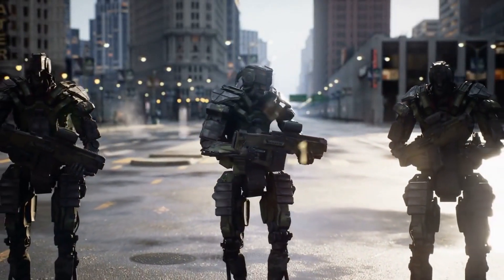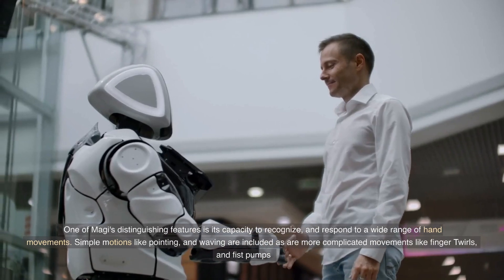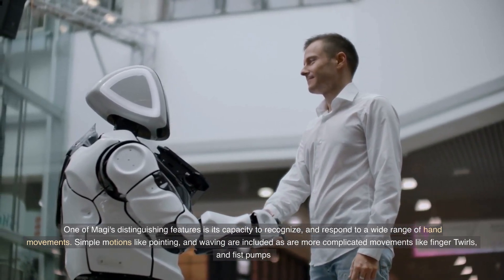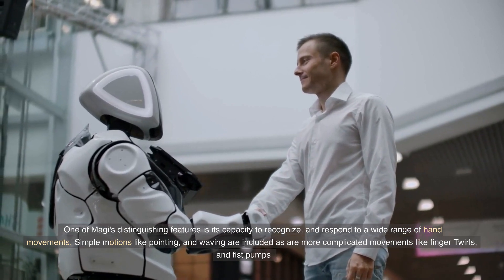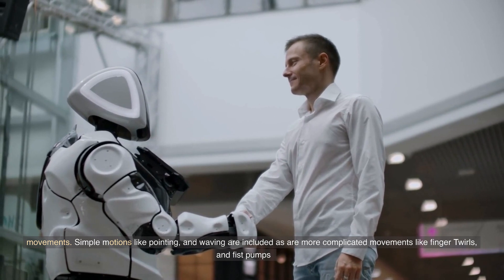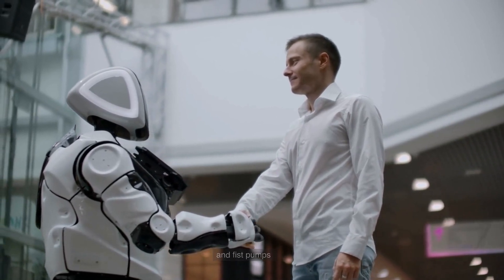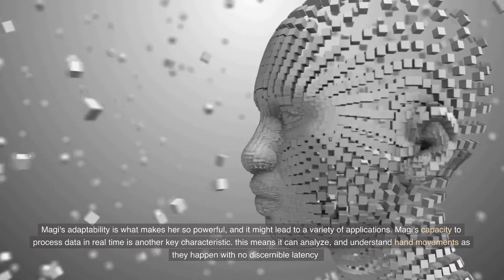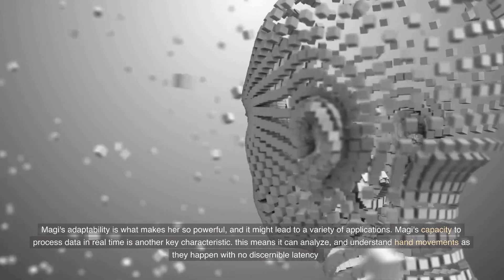One of Magi's distinguishing features is its capacity to recognize and respond to a wide range of hand movements. Simple motions like pointing and waving are included as are more complicated movements like finger twirls and fist pumps. Magi's adaptability is what makes her so powerful and it might lead to a variety of applications.